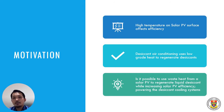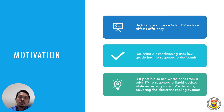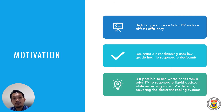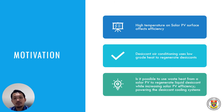The closest application would be the solar PVT, where they use the waste heat from the solar PV to heat up the temperature of water. So the main question here is: is it possible to use waste heat from a solar PV to regenerate liquid desiccant, while at the same time increasing the solar PV efficiency and, in turn, powering the solar desiccant system itself? This is basically what we are trying to achieve in this paper.